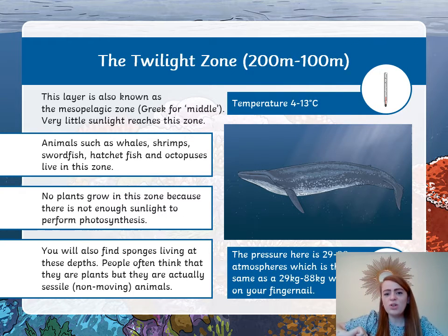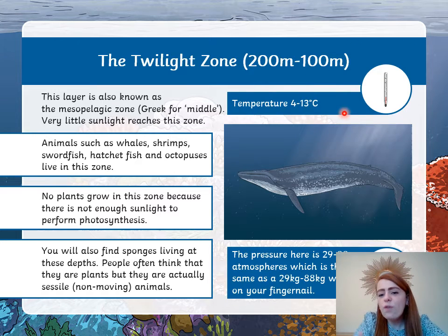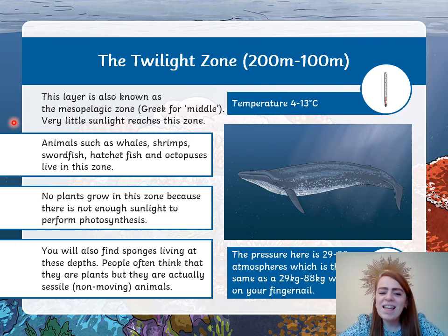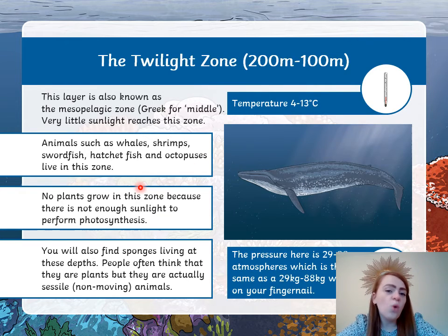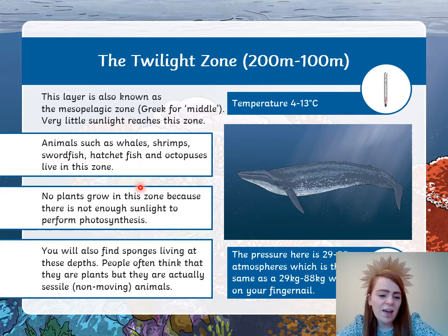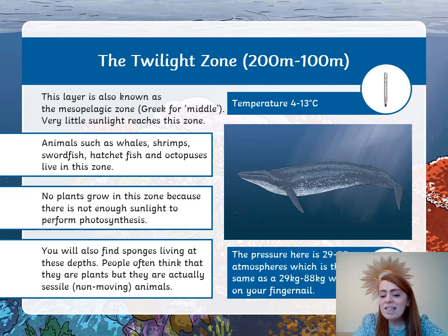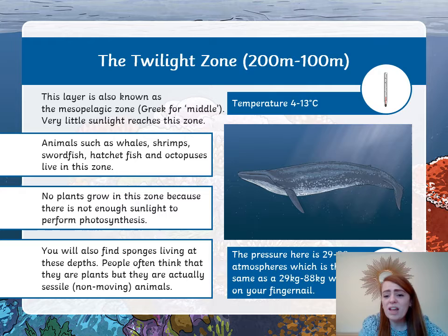Going down deeper now into the twilight zone — from 200 metres to 1,000 metres. The temperature here is getting colder: 4 to 13 degrees Celsius. This layer is also known as the mesopelagic zone, which is the Greek for the middle zone, and very little sunlight is reaching this zone. Animals such as whales, shrimps, swordfish, hatchetfish, and octopuses live in this zone. There are no plants here because there's not enough sunlight to perform photosynthesis. You also get sponges living at these depths — people often think these are plants, but they're actually sessile, which means non-moving animals. The pressure here is 29 to 88 atmospheres, which is the same as 29 to 88 kilograms of weight on your fingernail.